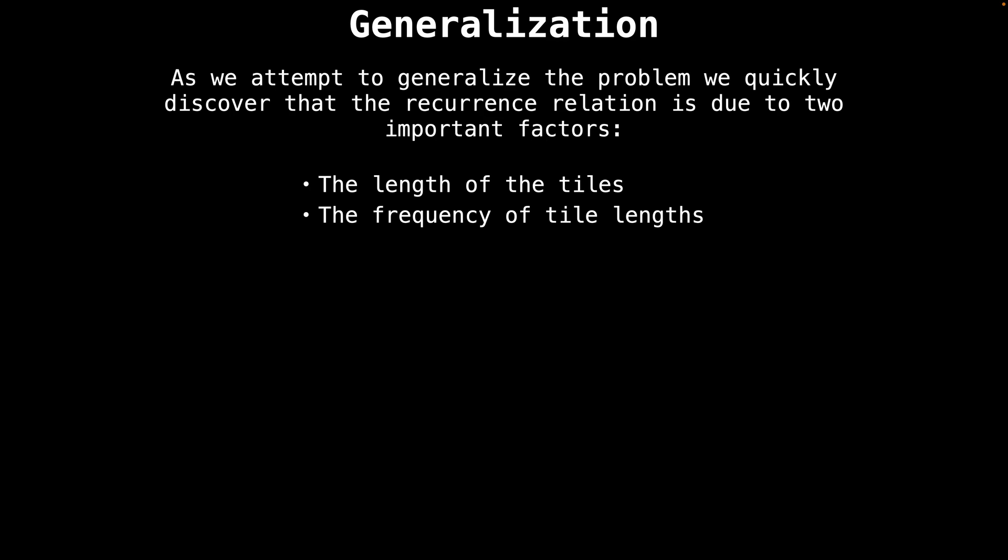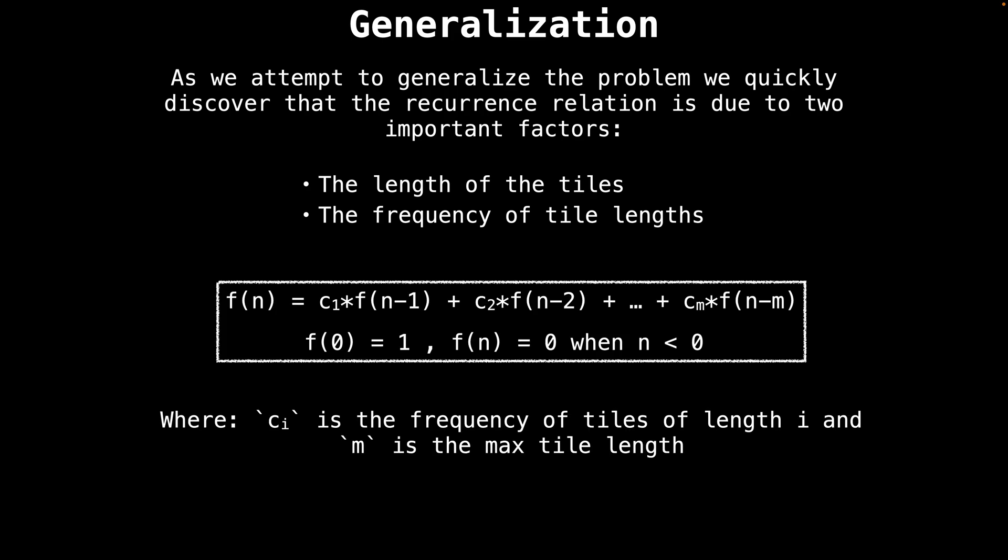This brings us to the generalization of the problem. And as we attempt to derive a general solution, we quickly discovered that the recurrence relation is due to two important factors. First, the length of the tiles at our disposal. And secondly, the frequency of the tile lengths. Using that information, we are able to conjure up a linear recurrence which incorporates the lengths of the tiles and the frequency of the tile lengths. The length of the tiles is used to determine the offset in the function to get the board length. And the frequency of the tile lengths is used to determine the coefficients in front of the terms in the linear recurrence.